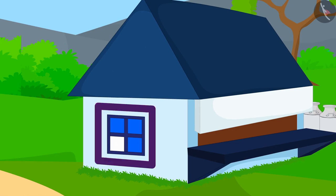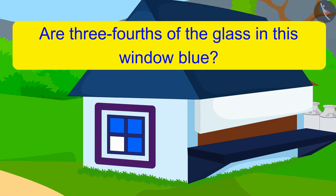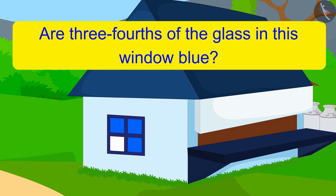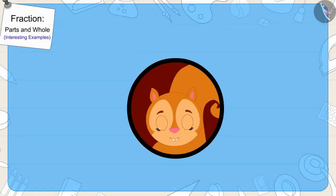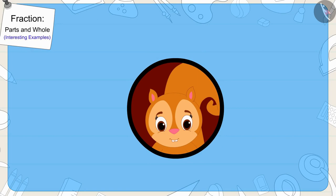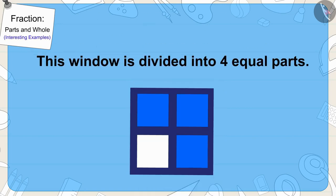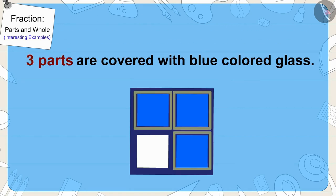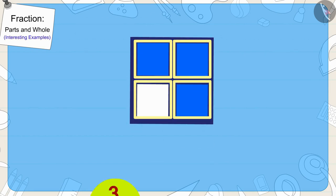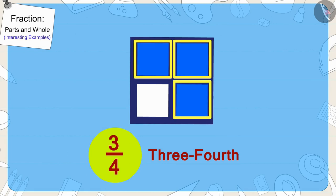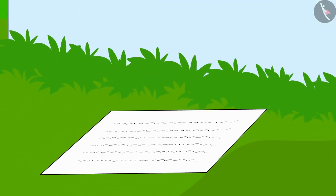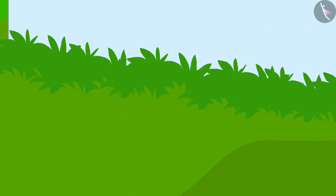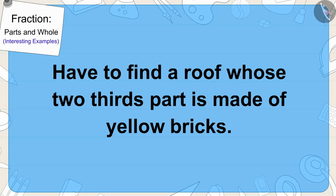Now Chanda started looking for that window and she finally saw such a window. Are three-fourths of the glass in this window blue? You can stop the video to find the answer. Yes, your answer is absolutely correct. This window is divided into four equal parts, out of which three parts are covered with blue colored glass. In this way, three-fourths of the window has blue glass. Chanda found her next clue under this window.